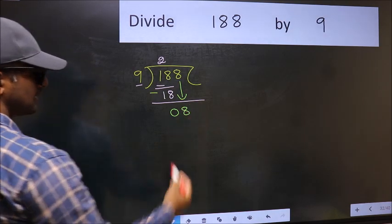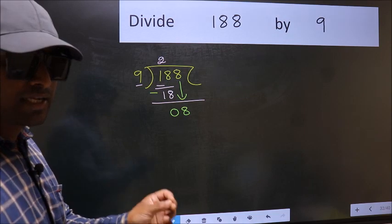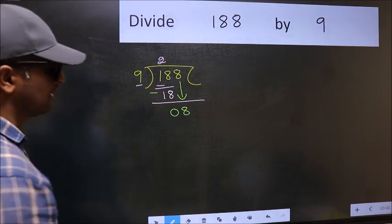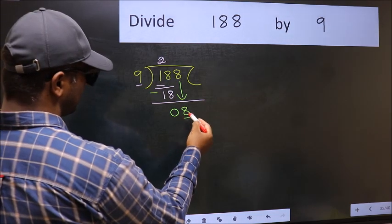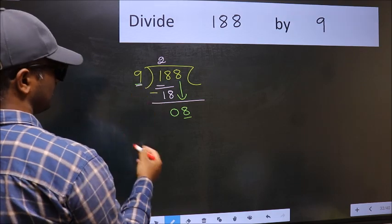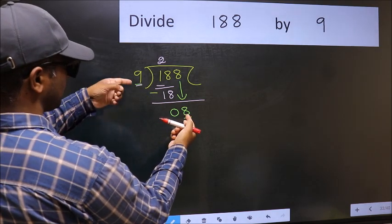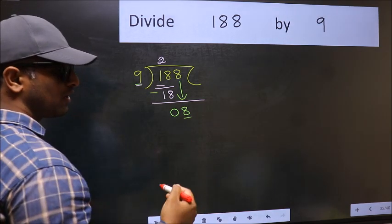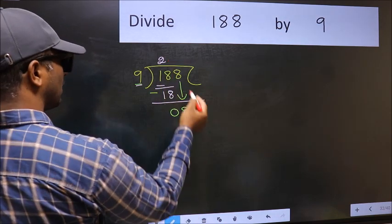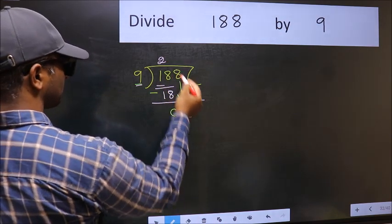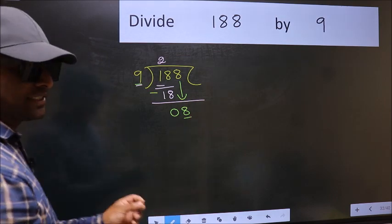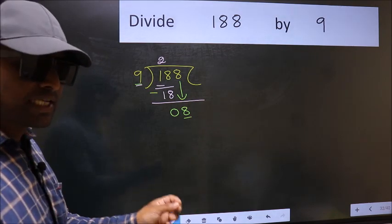After this step, the mistake happens. Here we have 8 and here 9. 8 is smaller than 9. So what many do is they directly put a dot and take 0, which is wrong.